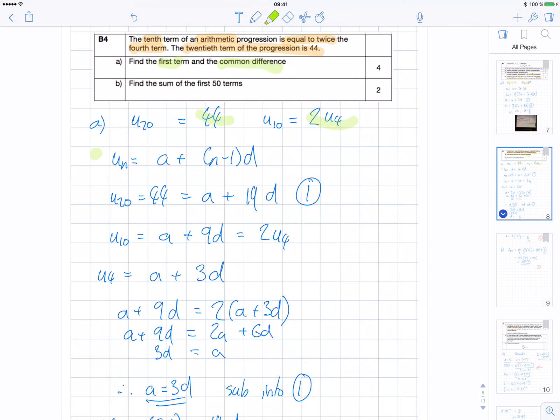I know that the 20th term is 44, so 20 minus 1 is 19. And that was, I believe, where I had my mistake earlier. So I know what u20 is: 44 equals a plus 19d.